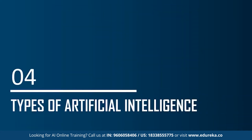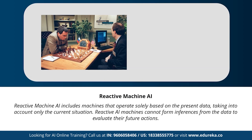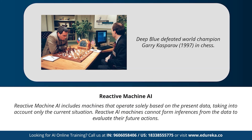Moving on to the different types of artificial intelligence. Based on the functionality of AI-based systems, AI can be categorized into four types. The first type is reactive machines AI. This type includes machines that operate solely based on present data and take into consideration only the current situation. Reactive AI machines cannot form inferences from data to evaluate future actions — they can perform only a narrowed range of predefined tasks. An example is IBM's chess program that beat world champion Garry Kasparov, one of the most impressive AI machines built so far.